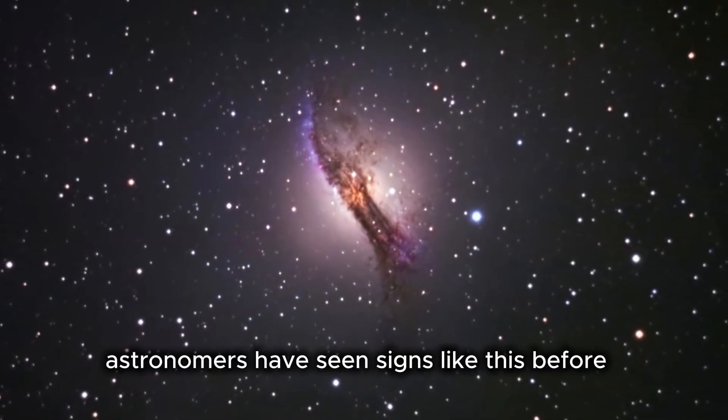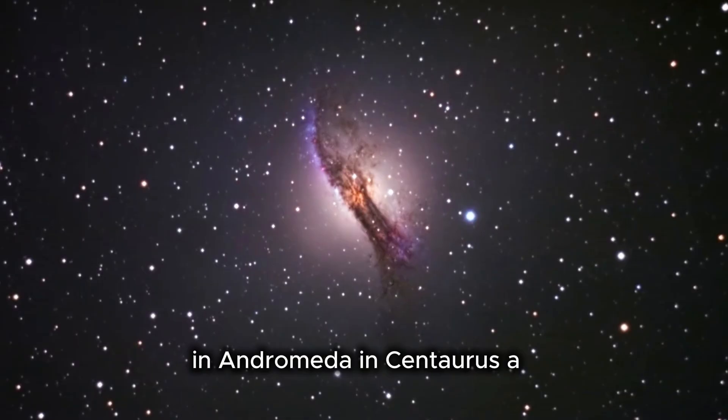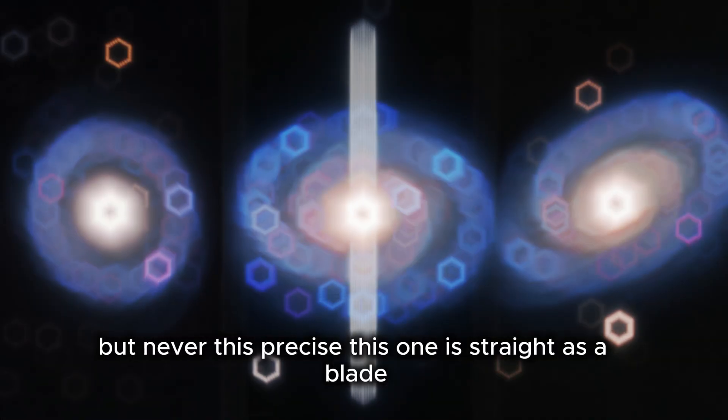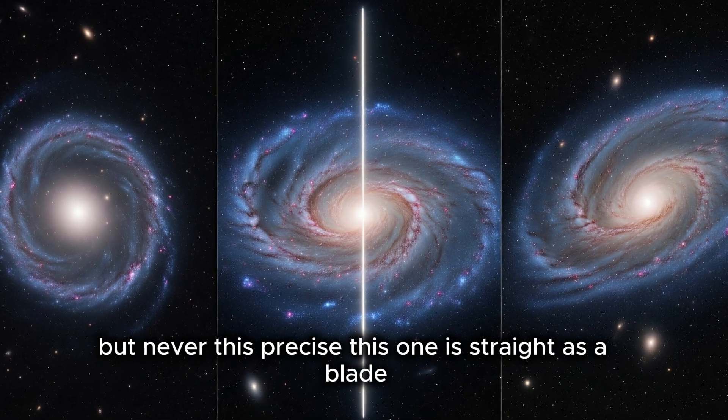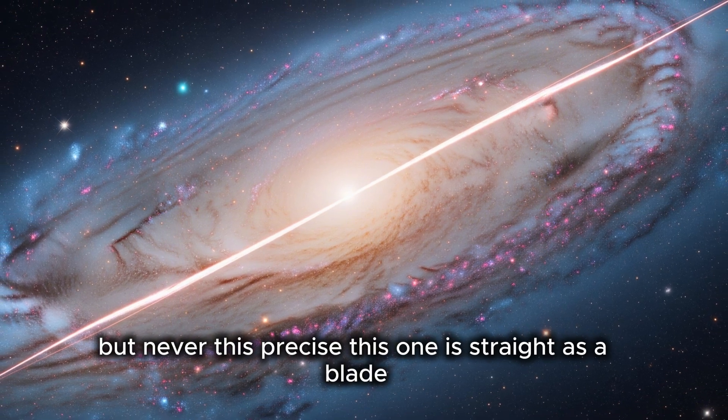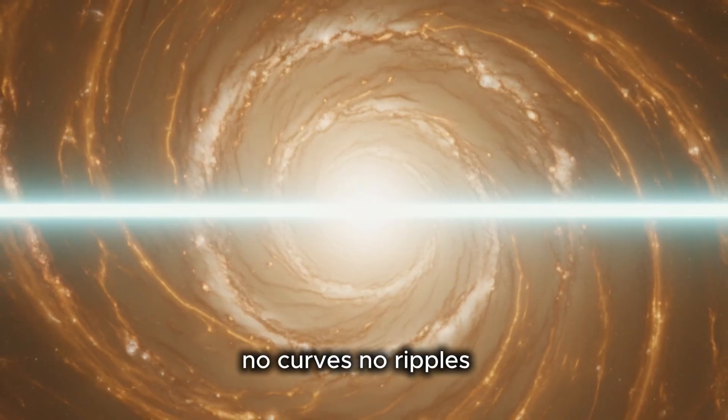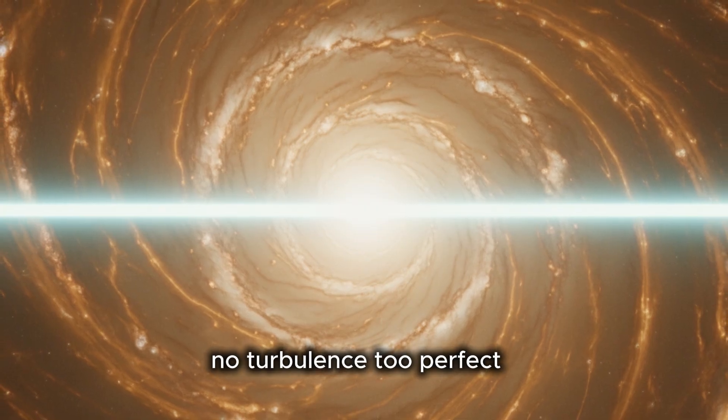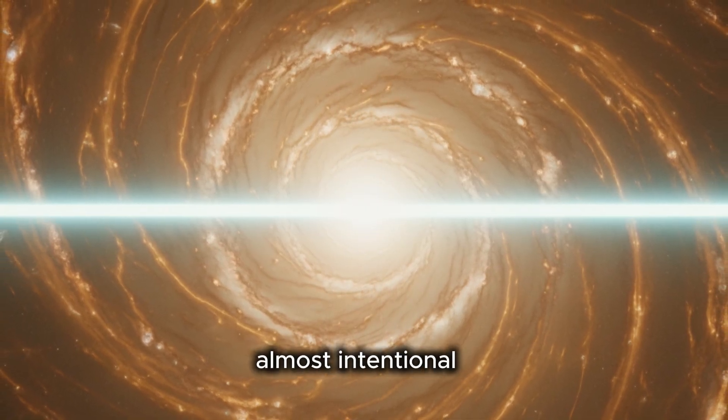Astronomers have seen signs like this before. In Andromeda, in Centaurus A. But never this precise. This one is straight as a blade. No curves. No ripples. No turbulence. Too perfect.